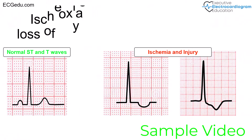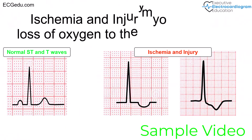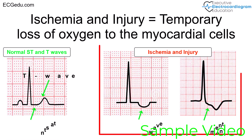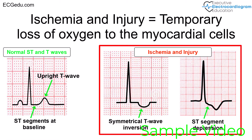For simplicity, ischemia and injury refer to a temporary loss of oxygen to the myocardial cells. When this happens, the ECG machine sees isolated symmetrical T-wave inversion or ST-segment depression in contiguous myocardial leads.